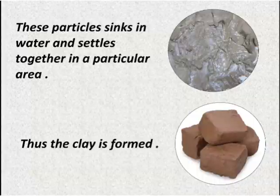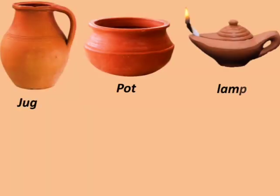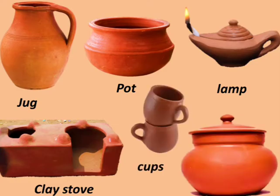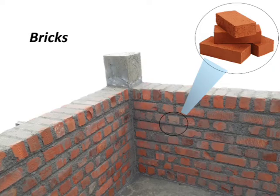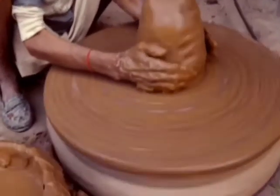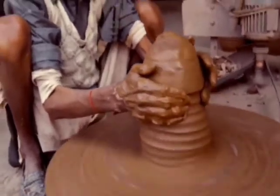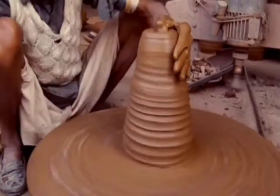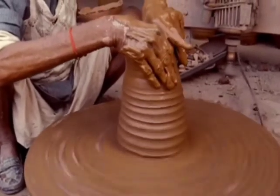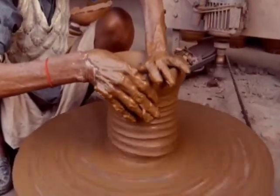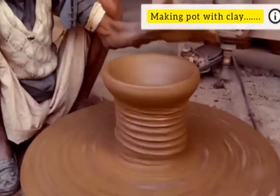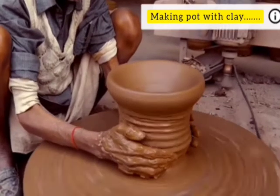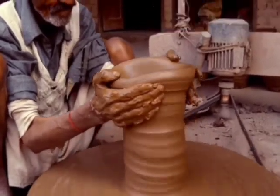Jug, pot, lamp, clay stove, cups, roof tiles and bricks are made up of clay. Next, let's see how a pot is made with clay.